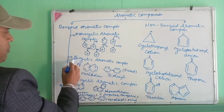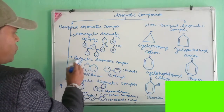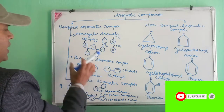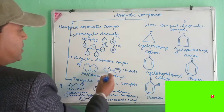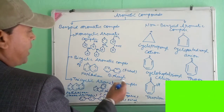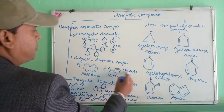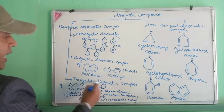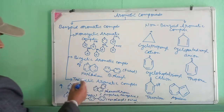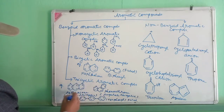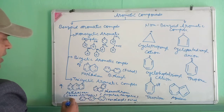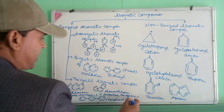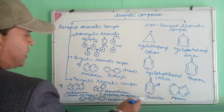Second is the bicyclic aromatic compound — 'bi' means two, so two benzene rings bonded with each other, like naphthalene in the fused condition, and biphenyl. Third is the tricyclic aromatic compound — three benzene rings bonded with each other: anthracene, which is a linear tricyclic structure, and phenanthrene, which is the angular tricyclic structure.